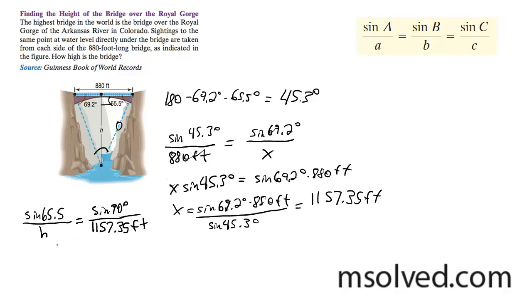And then cross multiply. So sine of 90 is just 1, so height is equal to 1157.35 feet times the sine of 65.5 degrees.